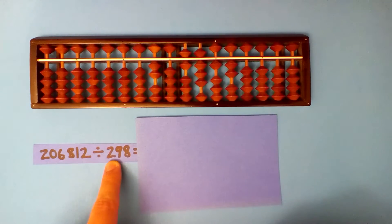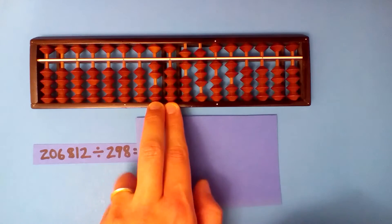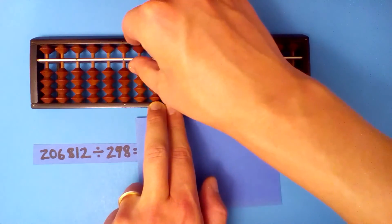Set up the dividend 206812 and divide. This is pretty much three, so I'm going to divide three into 20.